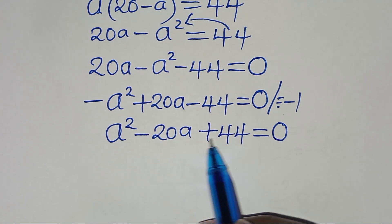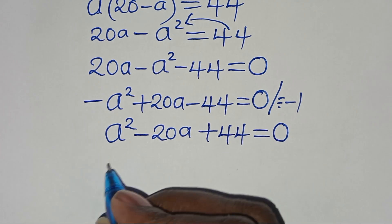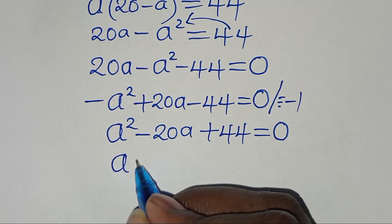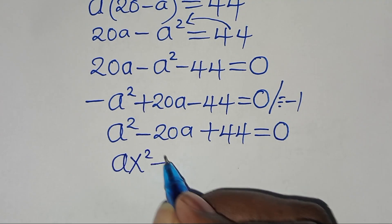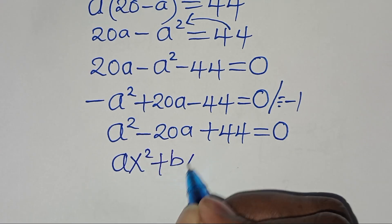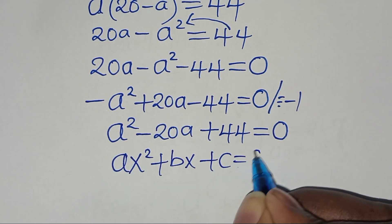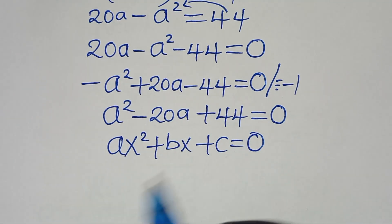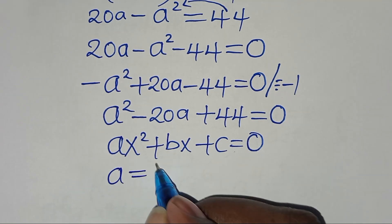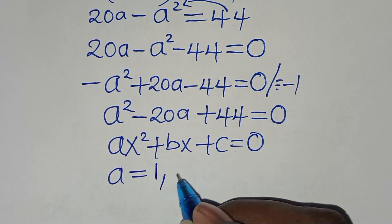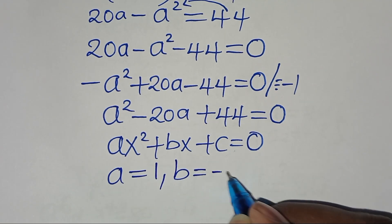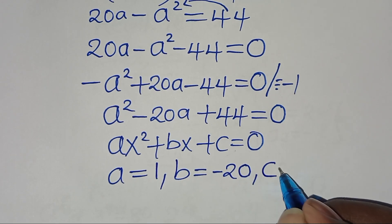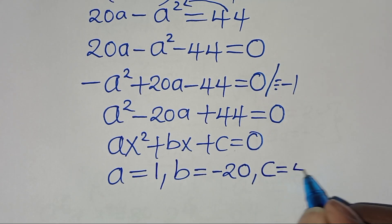So this is a quadratic equation of the form AX squared plus BX plus C equals 0. From this quadratic equation, we have A equal to 1, B equal to minus 20, and C is equal to 44.